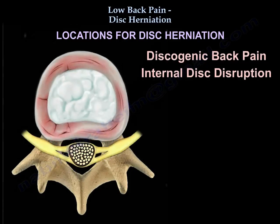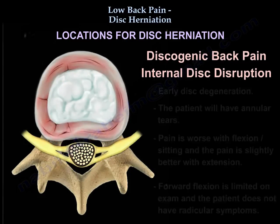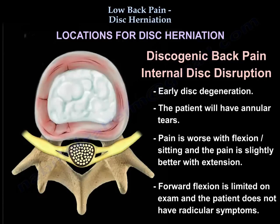Discogenic back pain involves internal disc disruption with early disc degeneration. The patient will have annular tears; pain is worse with flexion and sitting, and slightly better with extension. Forward flexion is limited on exam, and the patient does not have radicular symptoms.